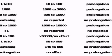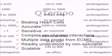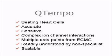Q-Tempo reduces risk in the drug development process and significantly increases confidence that a compound will not have unforeseen and costly side effects in the clinic. Q-Tempo is based on beating heart cells, is accurate, sensitive, and can assay complex ion-channel interactions. Q-Tempo provides numerous data points in a format that can be readily understood by non-specialists, and the whole assay is scalable, allowing high-throughput screening.